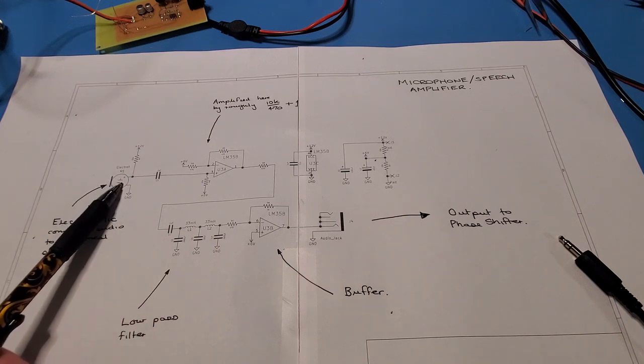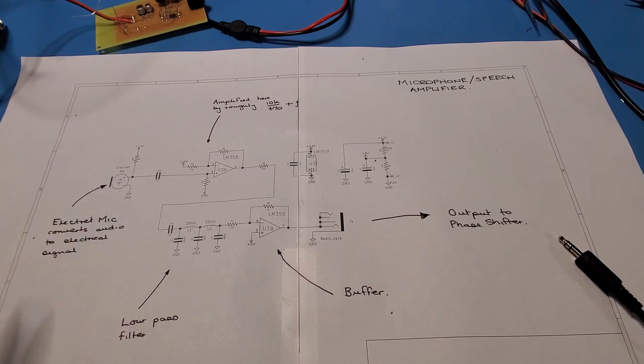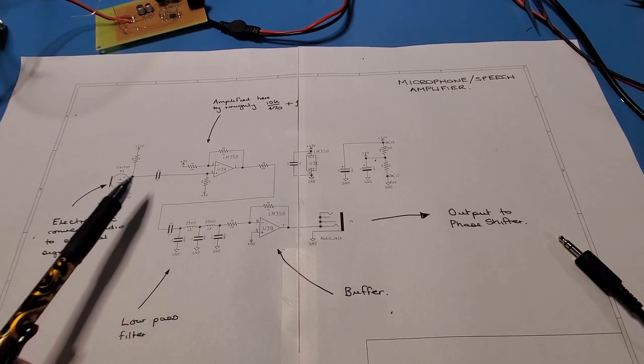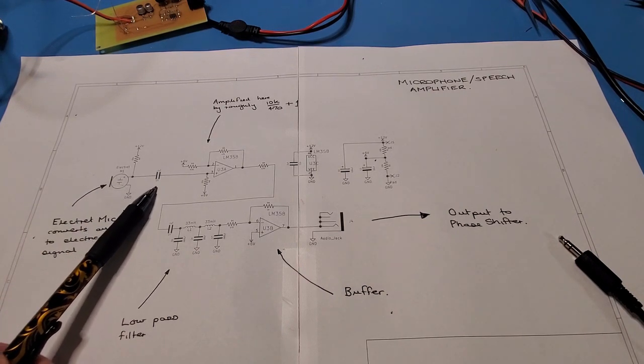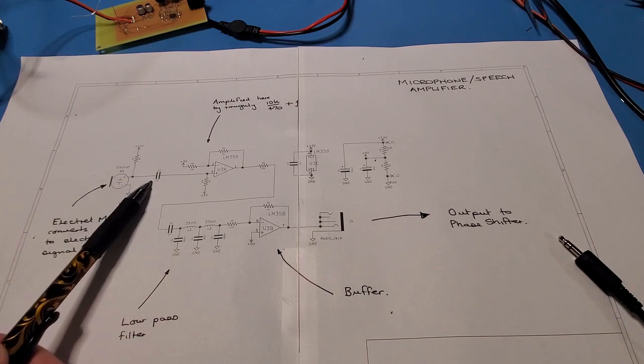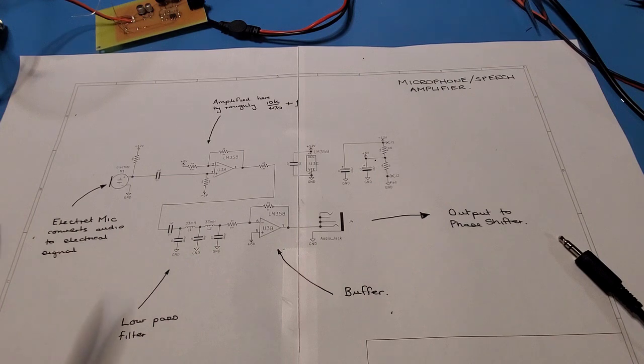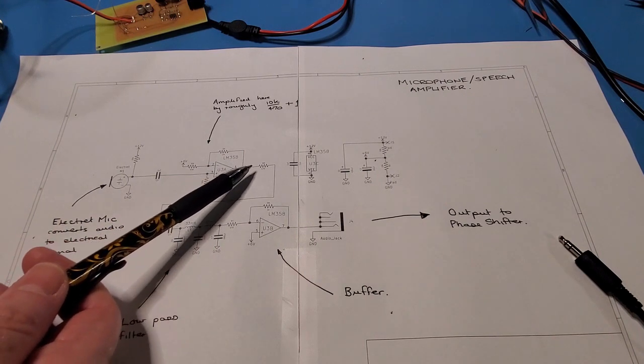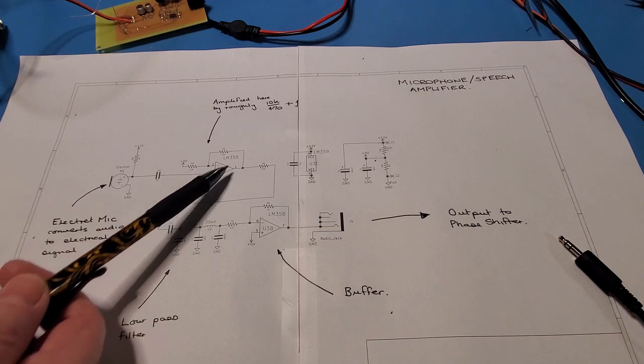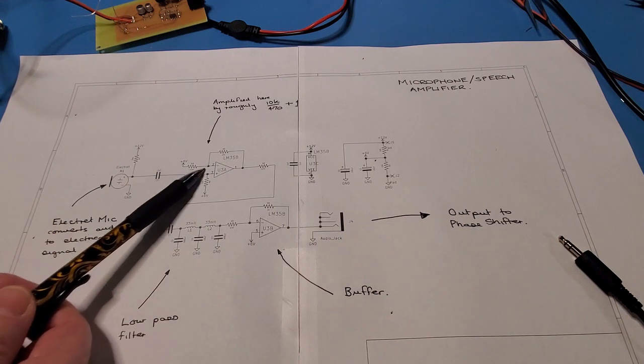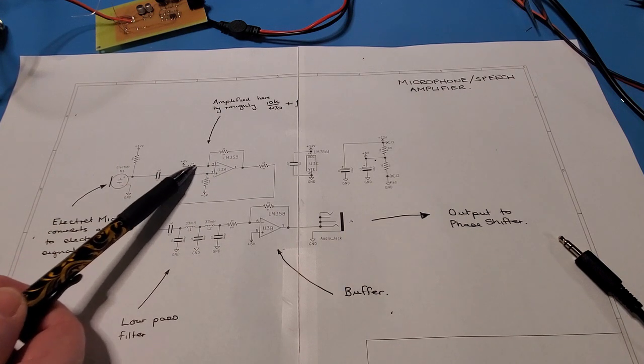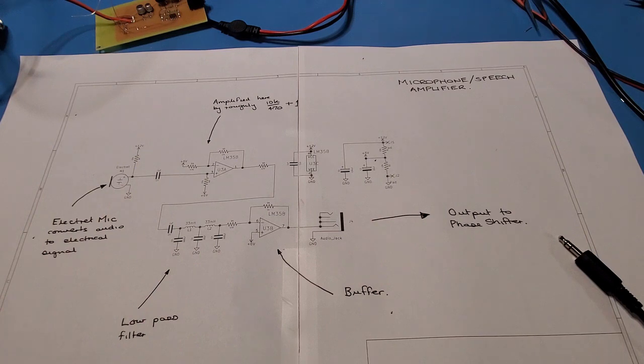There's a FET inside here which converts that audio signal to an electrical signal. That's followed up with a decoupling cap here to remove that DC bias and it passes on to the first stage op amp which is configured in a non-inverting fashion. We have a 10k resistor here and a 470 ohm resistor here that sets up the gain of the circuit.